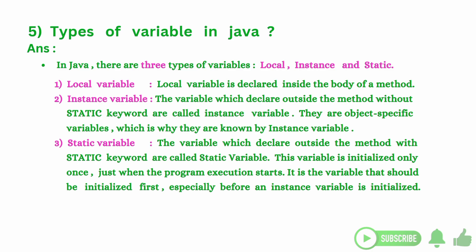Static variable: the variables which are declared outside the method with the static keyword are called static variables. This variable is initialized only once, just when the program execution starts. It is the variable that should be initialized first, especially before instance variables are initialized.